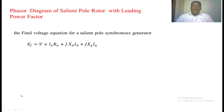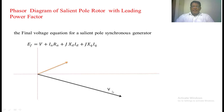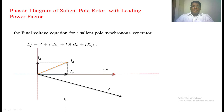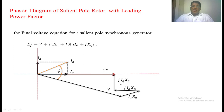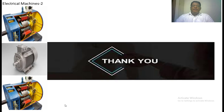Now we develop the phasor diagram with a leading power factor. We take the same x-axis and y-axis with the voltage phasor. All phasors are rotating anti-clockwise. The current phasor Ia leads V. On the x-axis, EF is taken — in the case of leading power factor, EF is less than V. We resolve armature current into Id and Iq components. For V, we add Ia·Ra drop parallel to Ia. Then j·Id·Xd is drawn perpendicular to Id from the tip of Ia·Ra, and j·Iq·Xq is drawn perpendicular to Iq up to EF. The phasor sum of these four components gives the excitation voltage. This is the phasor diagram of the salient pole synchronous generator with a leading load.